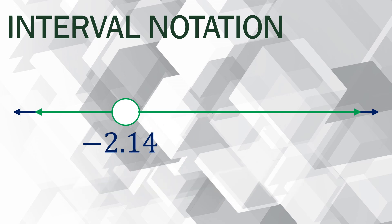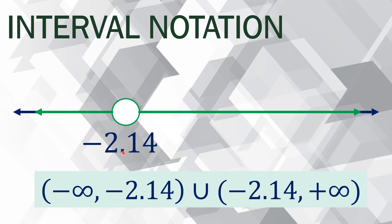In this case, negative 2.14 is excluded. It moves to the left infinitely and to the right infinitely; however, negative 2.14 is not part of it. We only exclude negative 2.14 — that is why in the symbol we use parentheses, meaning it is excluded. We use union because since a single number is excluded, there is a division on the left and the right, so we need the union symbol to connect these two parts.